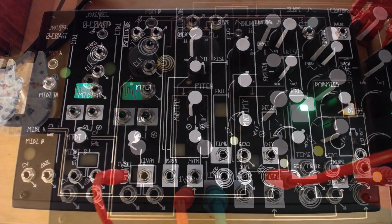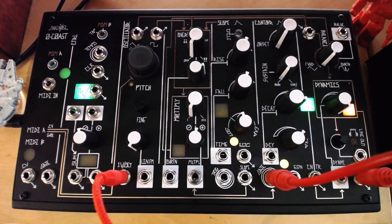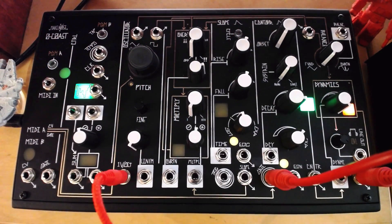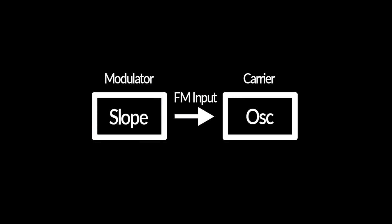One of the most common forms of frequency modulation, vibrato, employs a low-frequency oscillator as the modulator at a very low index. On the NoCoast, we can use the cycling slope section to experiment with this.